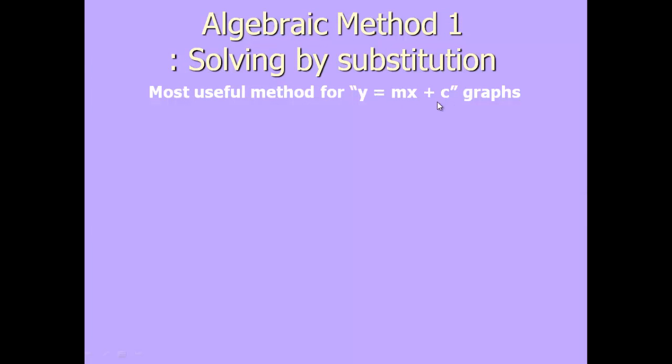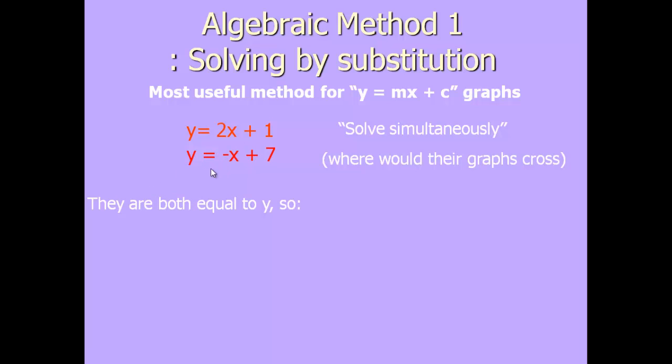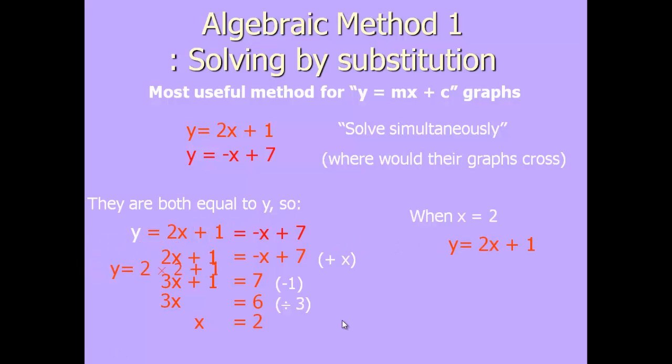When we have y equals mx plus c graphs, it's almost always easier to solve algebraically, and this method is the easiest. We have y equals 2x plus 1 and minus x plus 7. Because they're both equal to y, we can simply equate the right hand sides. So 2x plus 1 must equal minus x plus 7 where they meet. If we rearrange this, we've got minus x here, so if we add x to both sides, that gives us 3x on the left hand side. We then get rid of this plus 1 by subtracting 1, we get 3x equals 6, x equals 2, and then sub that into either equation gives us 5.